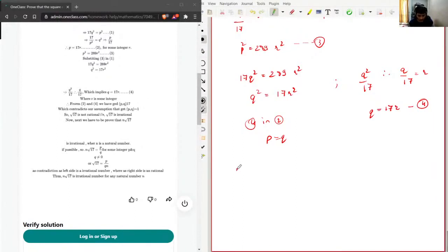Again we'll write n root 17 equal to P over Q for some integers where Q is not equal to 0. This will become root 17 equal to P over nQ, and again it is contradicting with the statement above because the left side is irrational whereas the right side is rational. So again this is not true, and n times square root of 17 is irrational.